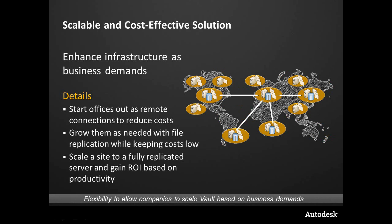The replication model supports both individual WAN access, file store replication, and full workgroup, and a combination. So in the image here, we have this hub-and-spoke model. We have the ability to take this data and scale up as a site needs it. Perhaps a site starts off with just file store replication, but they start adding users. We can easily promote them up to being a full replicated site as business demand increases.